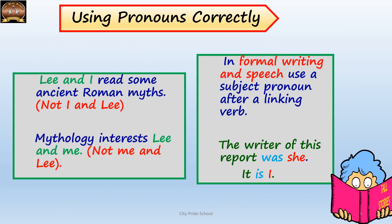Whenever there is a compound subject with a subject pronoun, the subject pronoun comes after the noun. For example, 'Lee and I' is a compound subject, so 'I' comes after 'Lee' — 'Lee and I read some ancient Roman myths' is correct, not 'I and Lee.' Similarly with compound objects, the object pronoun comes after the noun — 'Mythology interests Lee and me,' not 'me and Lee.'